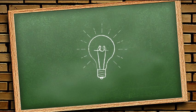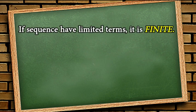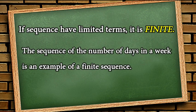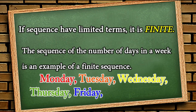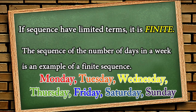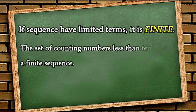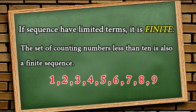We also have to know that if a sequence has limited terms, it is finite. The sequence of the days in a week is an example of a finite sequence: Monday, Tuesday, Wednesday, Thursday, Friday, Saturday, and Sunday. Nothing follows. The set of counting numbers less than 10 is also a finite sequence. It starts with 1 and ends with 9.